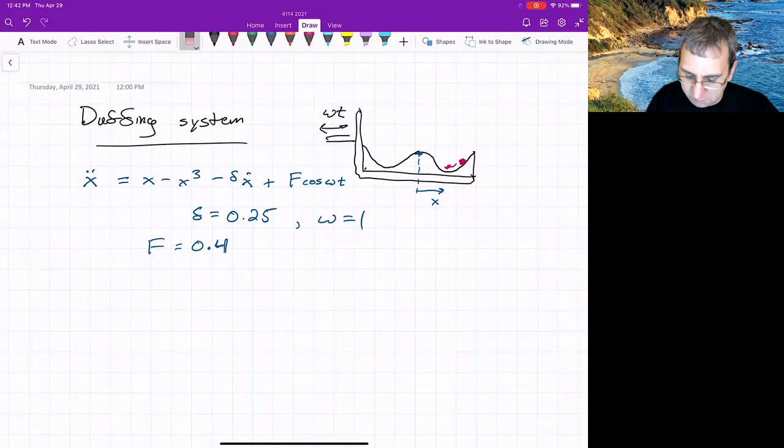If F equals 0.4, then we had that strange attractor. And things would wander on that forever, right?